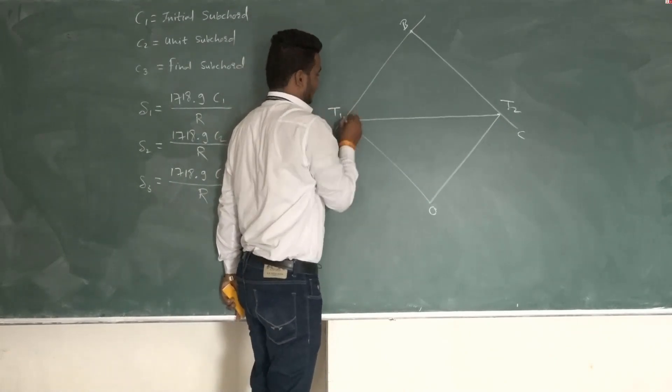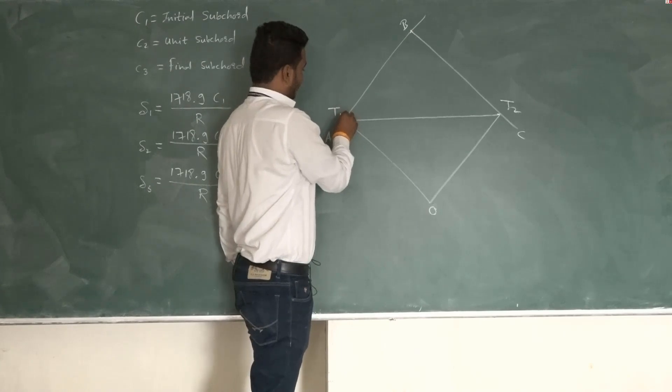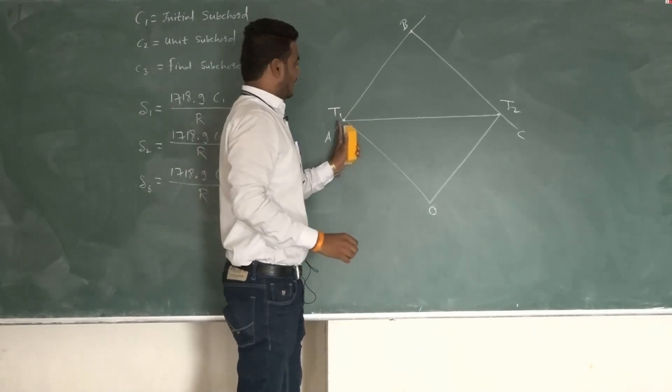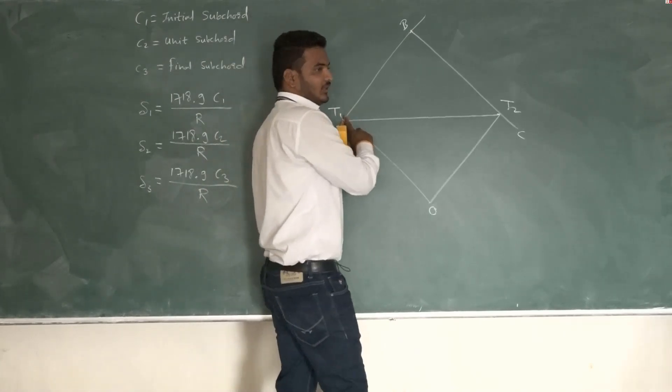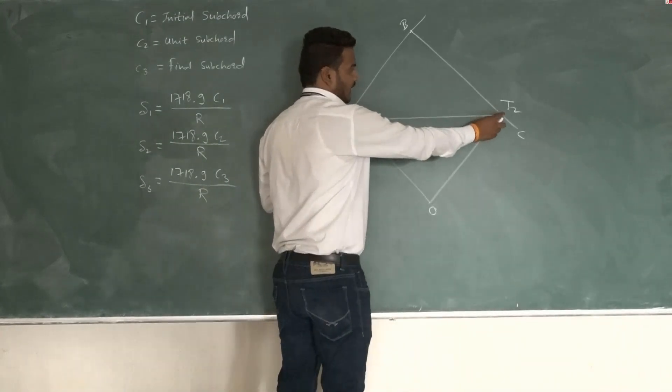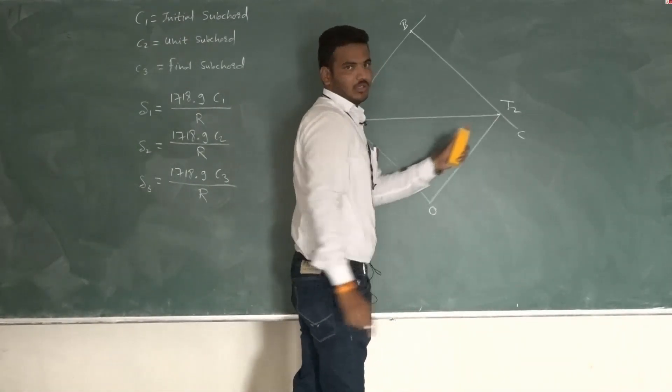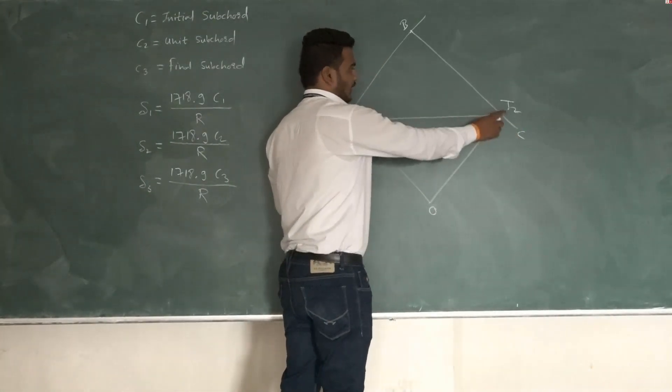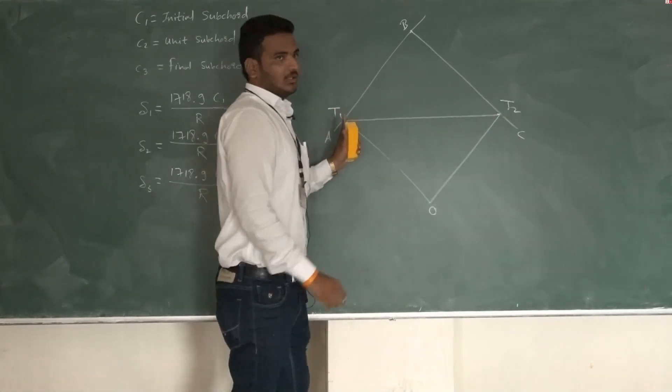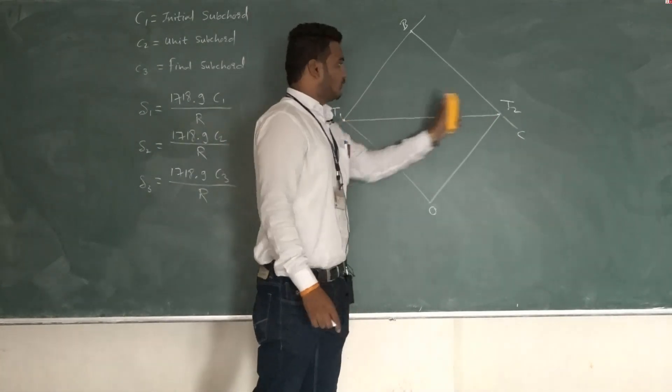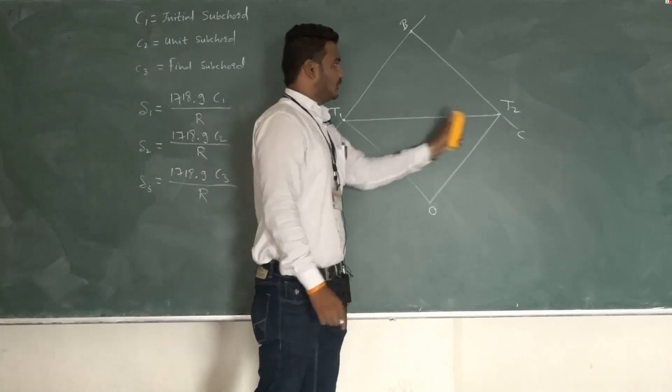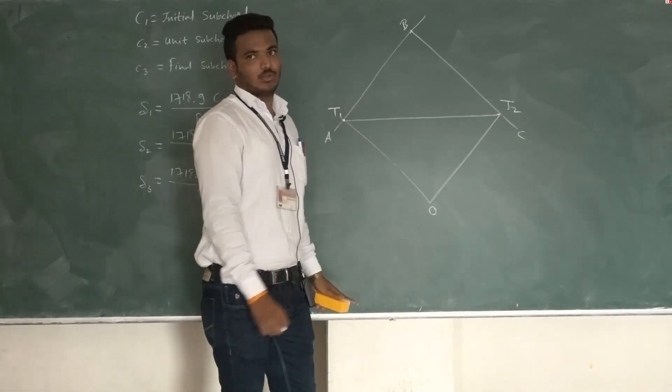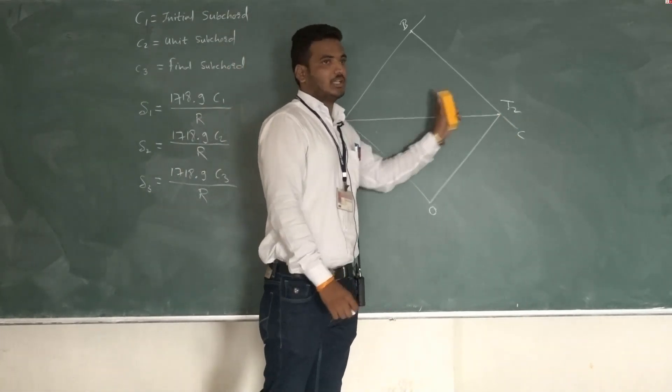First of all find out the change of station point T1, from station point T1 add curve length and find out the change of station point T2. After finding change of T2, that distance from T1 to T2 is called as chord length, total chord length for which we are going to set out a curve.